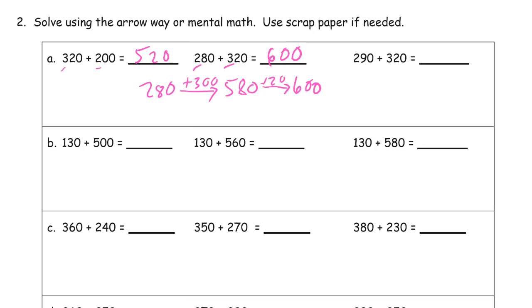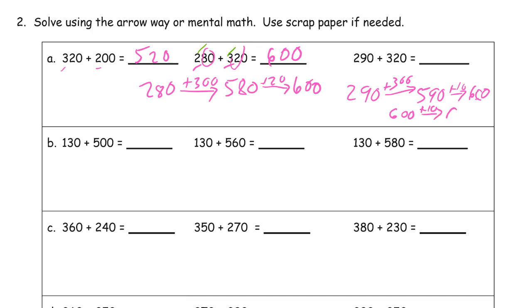You can write them out like that if you want. You might recognize right off that the 80 and the 20 is going to make another 100, and just see that 200 and 300 makes 500, and then the 80 and the 20 makes another 100 for 600. For 290 plus 320: add the 300 first for 590. Now we need to add 20 — 10 first gets us to 600, then 600 plus 10 more. Now we've added the 20 for 610.